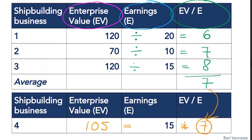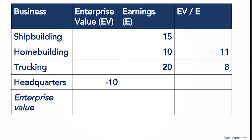We've just valued a single business. Now let's move to the case of valuing a multi-business firm. Let's say our multi-business firm has three businesses: shipbuilding, homebuilding, and trucking. What we did for shipbuilding — comparing it with other shipbuilding businesses — we're going to do exactly the same for homebuilding and trucking. In shipbuilding, we calculated a multiple of seven, and multiplying seven times 15 gives us an enterprise value for just that shipbuilding business of 105.